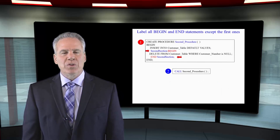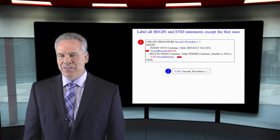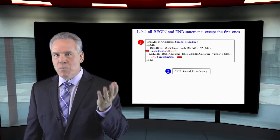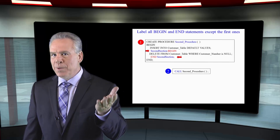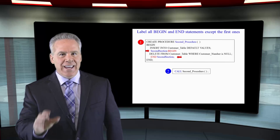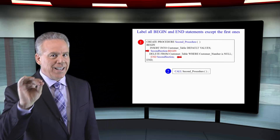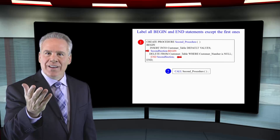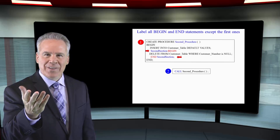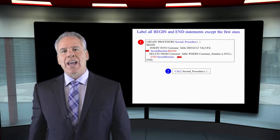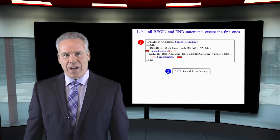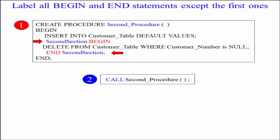Every stored procedure has a begin and end statement, but they could have more than one begin and end statement. Any time you have a second begin and end statement, you must give it a label — a name. Take a look at this example right here. Since we're going to be doing two different things, I've on purpose put them in two different sections.